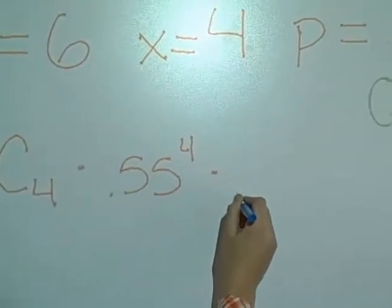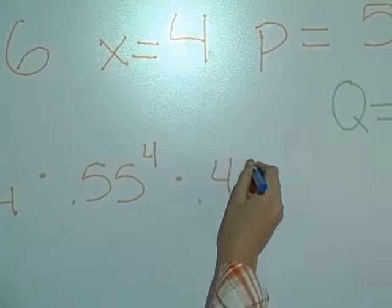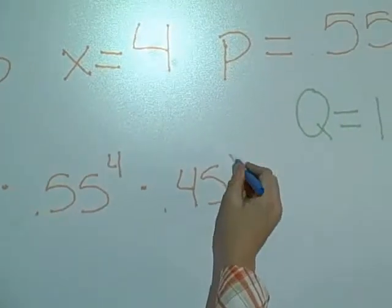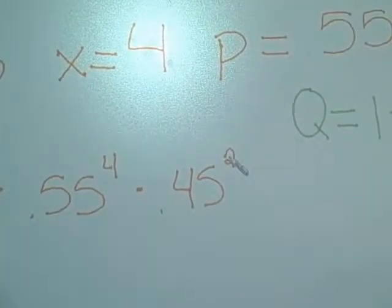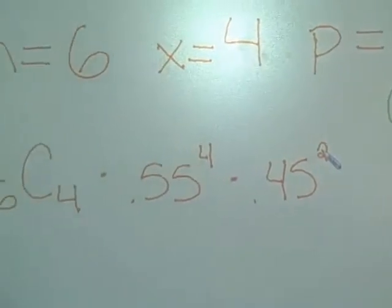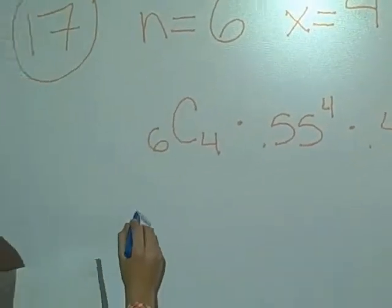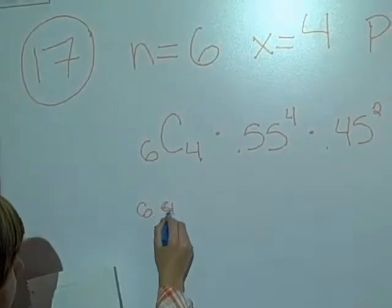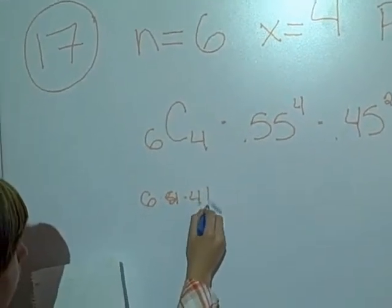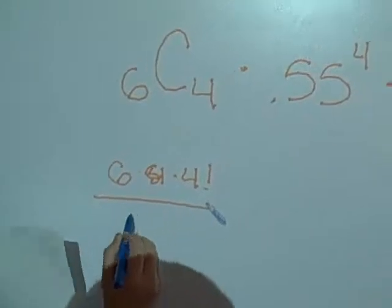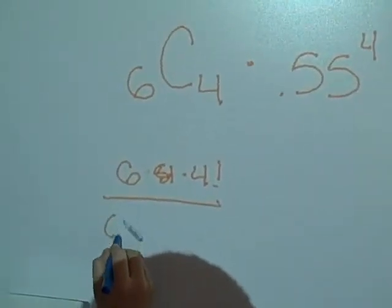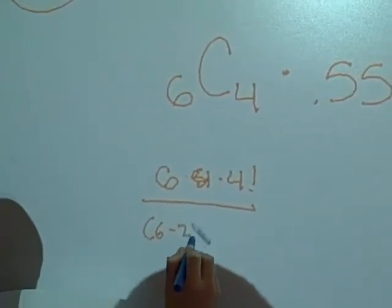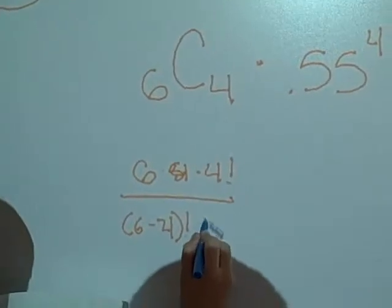Times q of 0.45 to 6 minus 2, so 2. And then, 6C4 is 6 times 5 times 4 over 3 times 2 times 1.